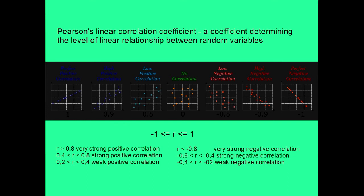If r is greater than 0.8, then we say that variables x and y are very strongly positively correlated. If r is between 0.4 and 0.8, we have strong positive correlation.